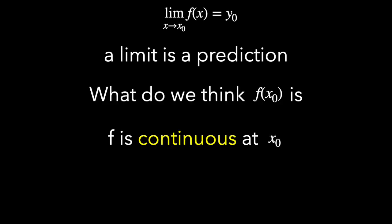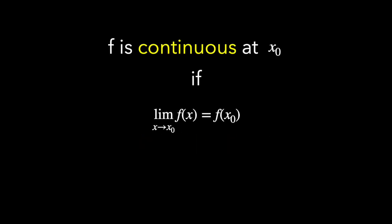We say that f is continuous at x sub 0 if the prediction is correct. In other words, f is continuous at x sub 0 if the limit as x goes to x sub 0 of f of x is f of x sub 0.